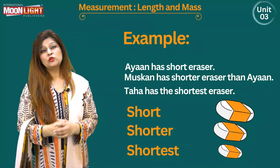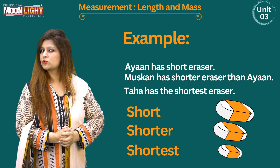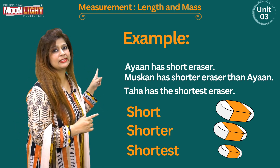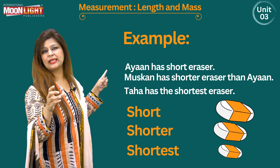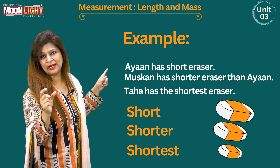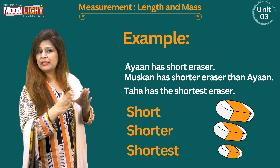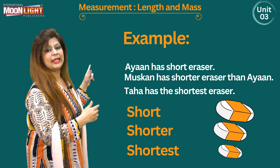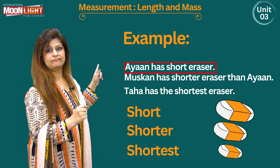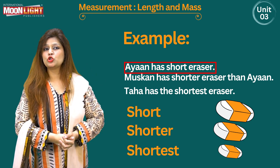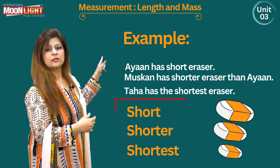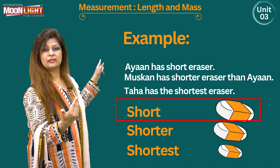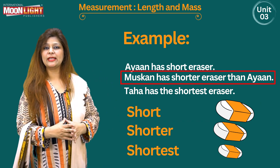Now let's think about an object that is small. I have taken an eraser. Eraser is not long — eraser is small. So I have chosen eraser here. Iyan has a short eraser. Then Muskan has a shorter eraser than Iyan. Short, then shorter.